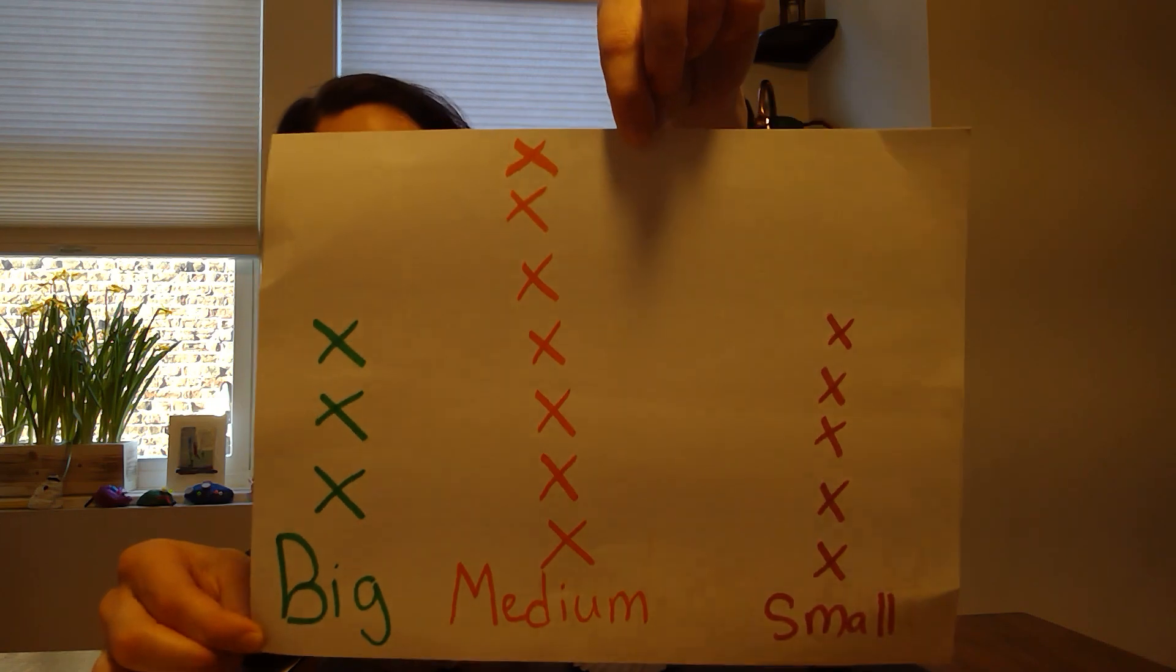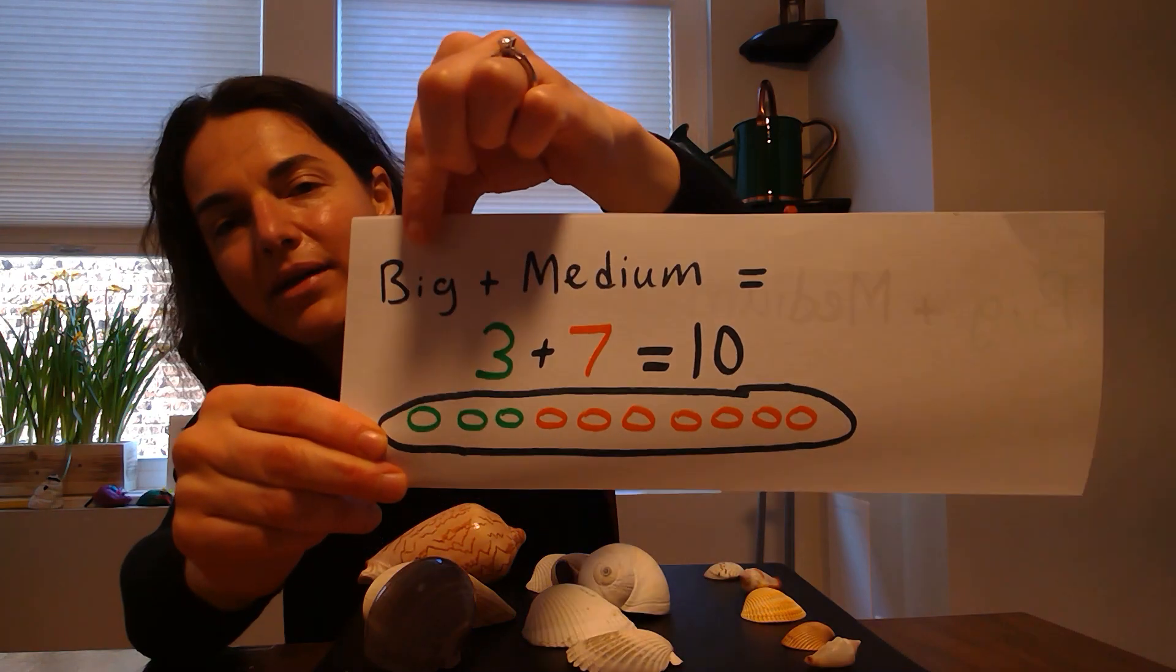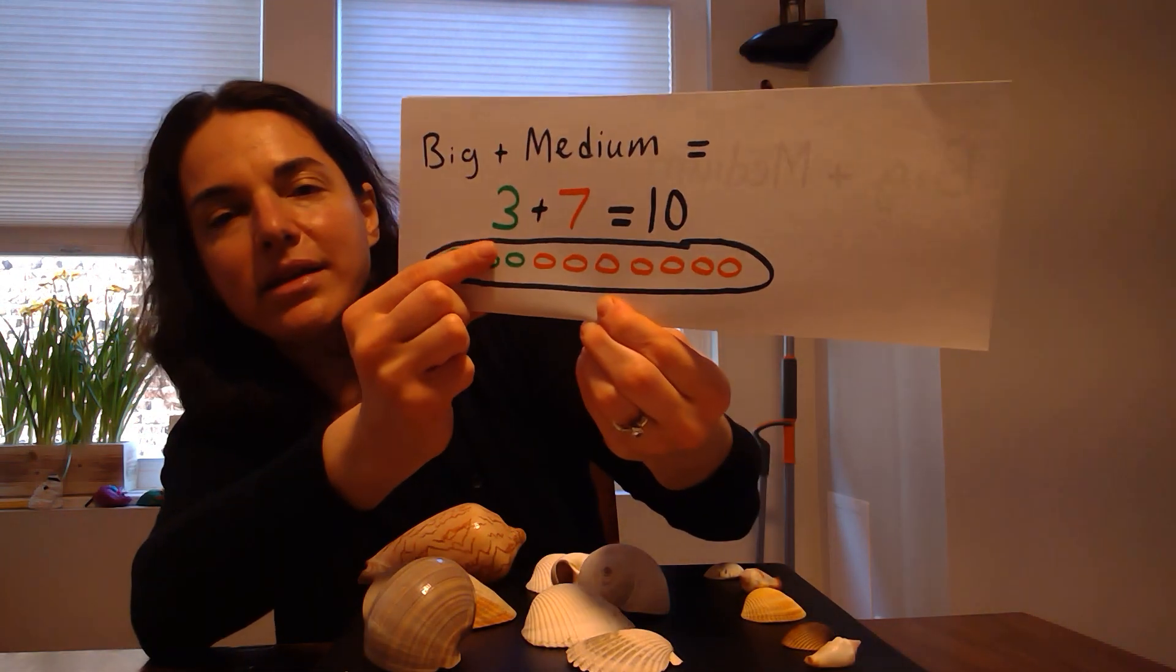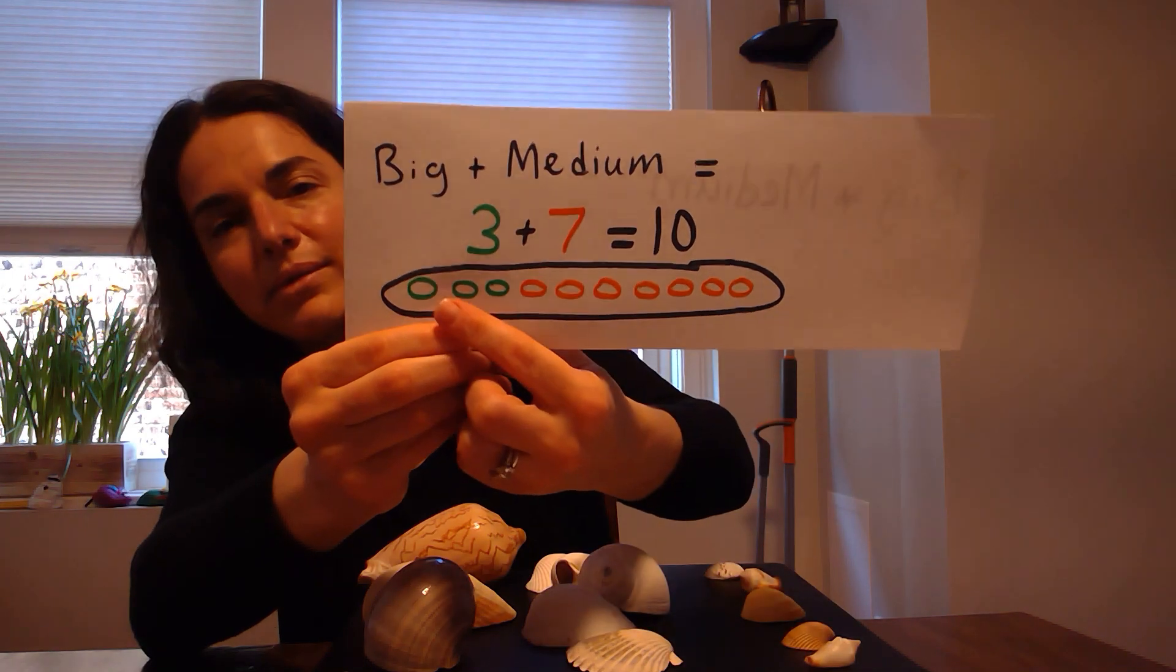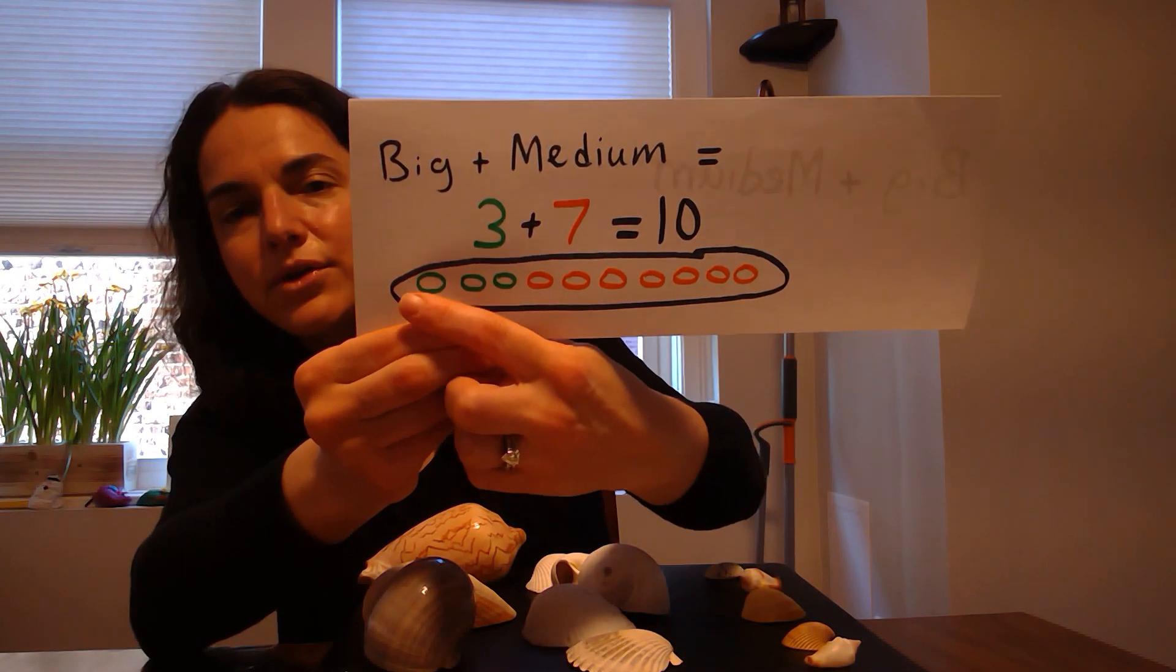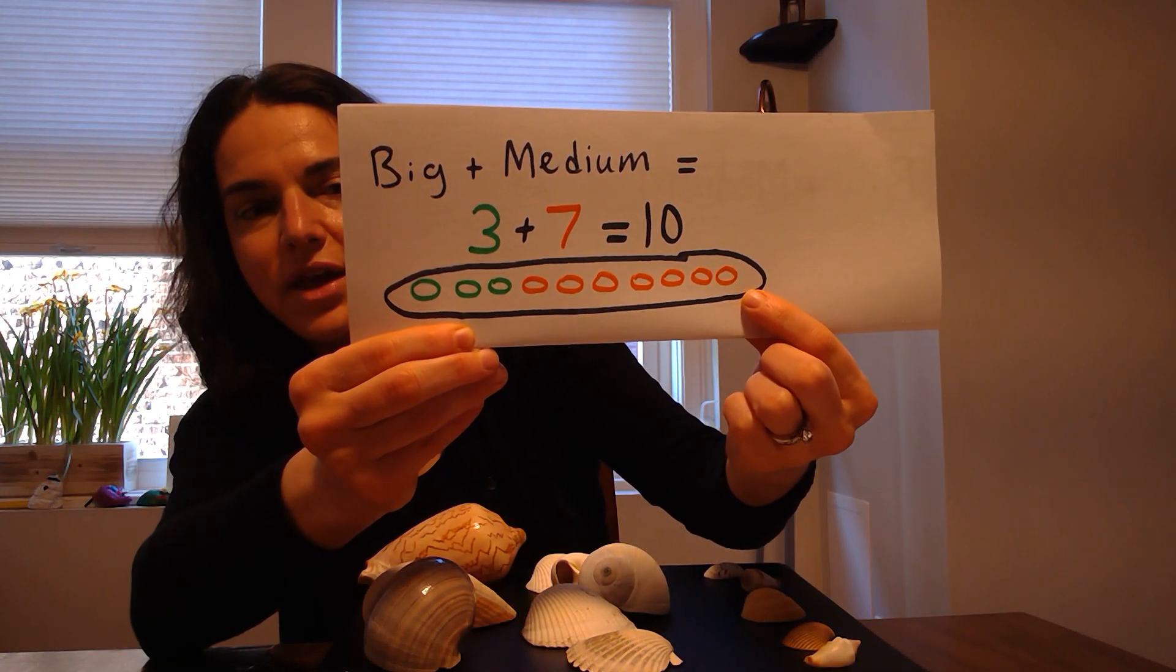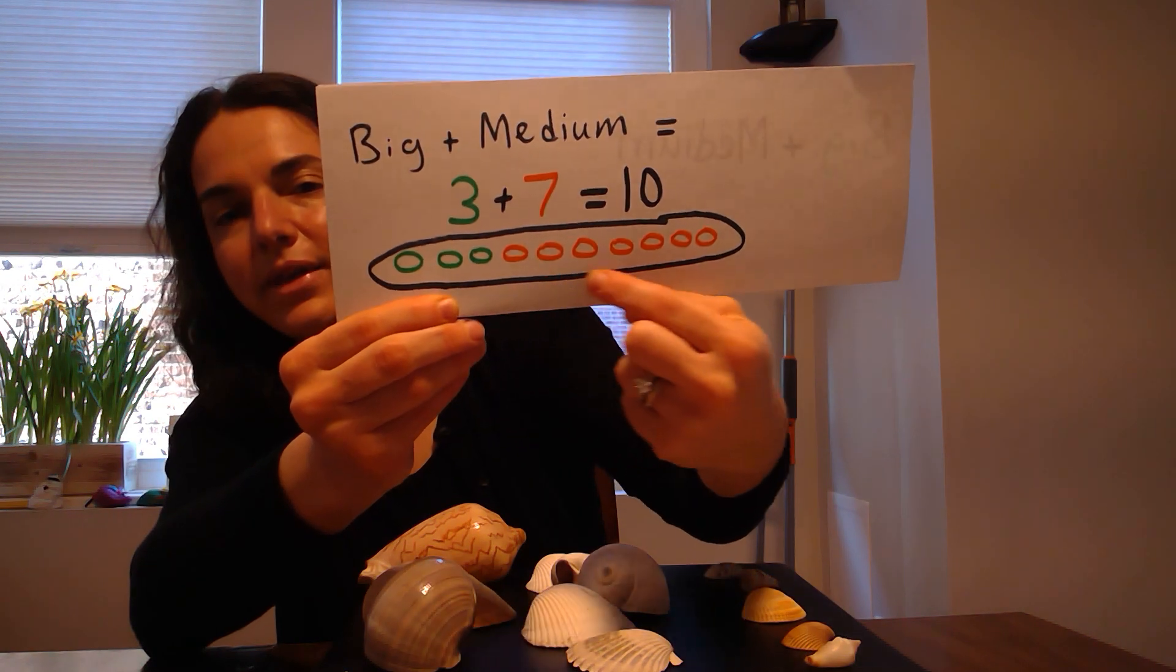I've also decided to use my graph to practice adding. The first thing I wanted to add was how many shells do I have if I add the big group to the medium-sized group? To organize my thinking, I wrote a number sentence: 3 plus 7. Then I decided to do a math drawing. When I use a math drawing, I like to keep it very simple and organized. So instead of drawing shells today, I decided just to draw circles. I do three green circles to represent the big shells and seven orange circles to represent the medium-sized shells. Then to show that I am adding, joining the two groups together, I drew a big oval around the entire group.